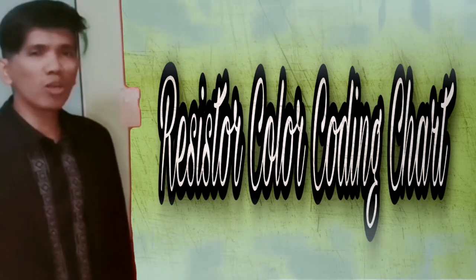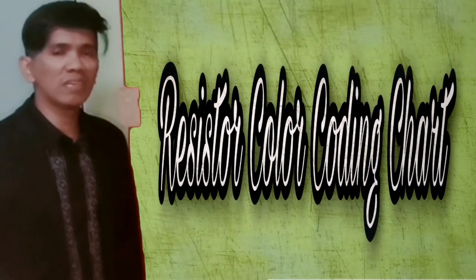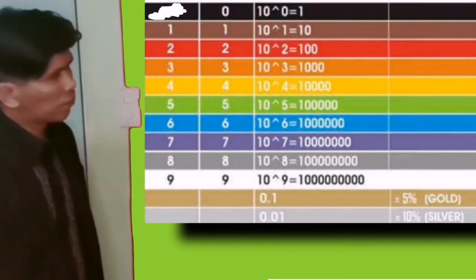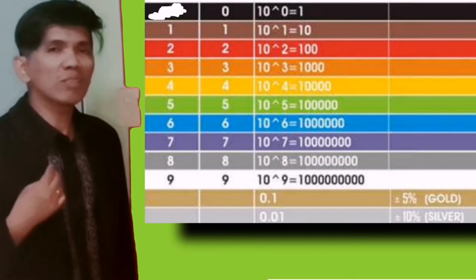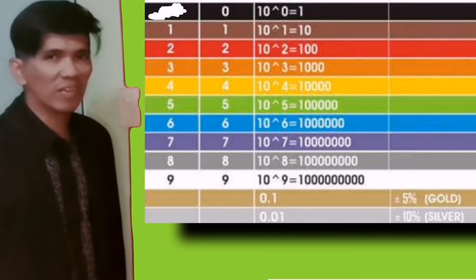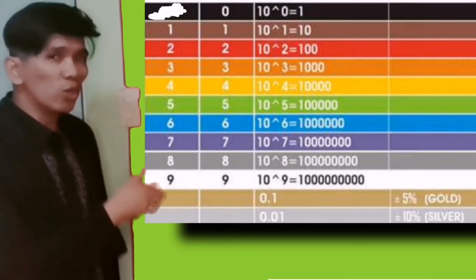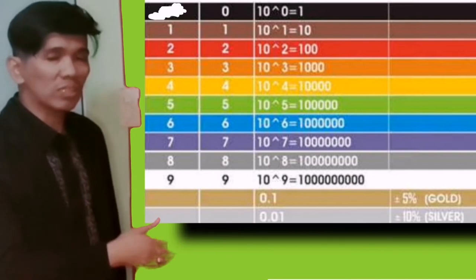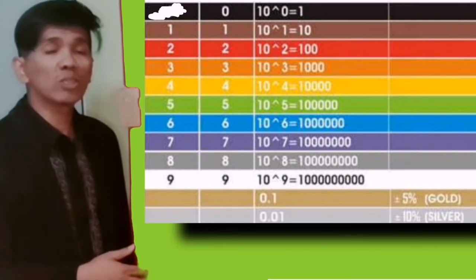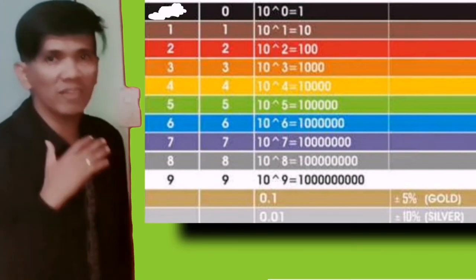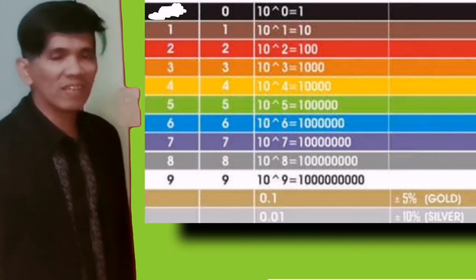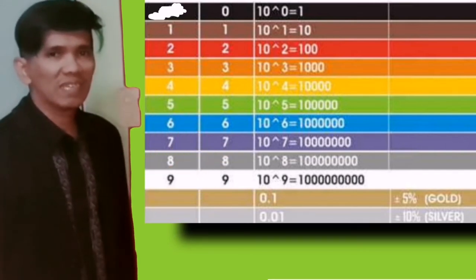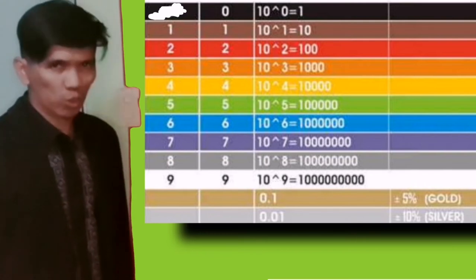The resistor color coding chart is divided into four columns. The first column is the first band, the second column is the second band, the third column is the third band — also called the Multiplier — and the fourth column is called the Tolerance.